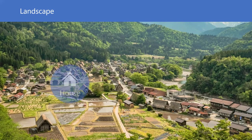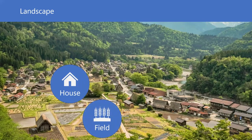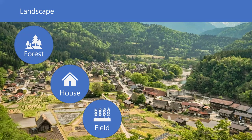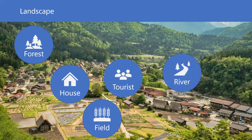You can see the traditional houses, Gassho-zukuri, which is a landmark of Shirakago. Around the houses you can see crop fields, and beyond those, forest. The central road running through the middle of the village has some tourists, and you can also see a river flowing. What I want you to focus on are these tourists — they enjoy culture and nature in the landscape.